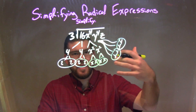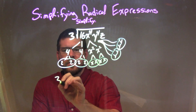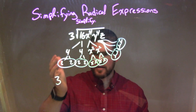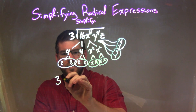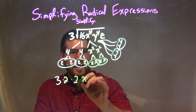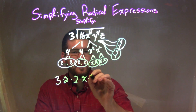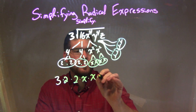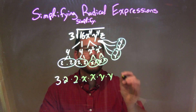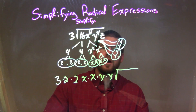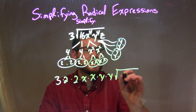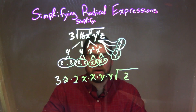When we write our next step here, 3 stays on the outside, and each pair represents a single digit or single number on the outside. So times 2, times another 2, times x, times x, times y, times y. Times the square root of whatever is left inside the square root, which is just z — the only single one by itself, that z right there.